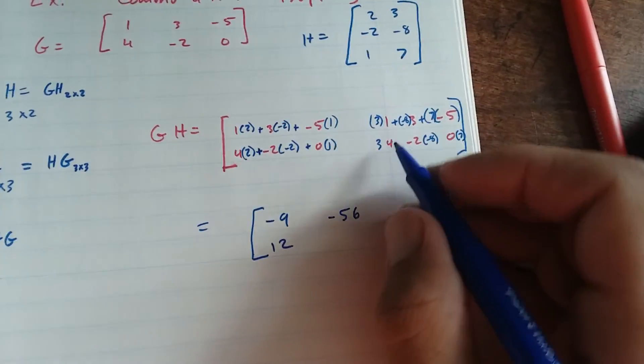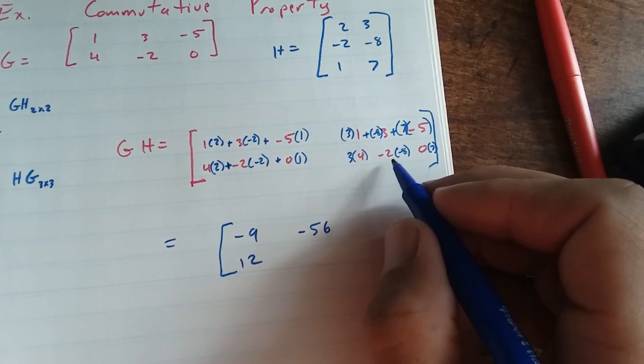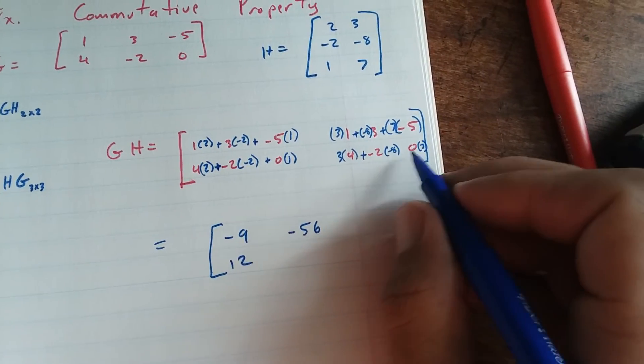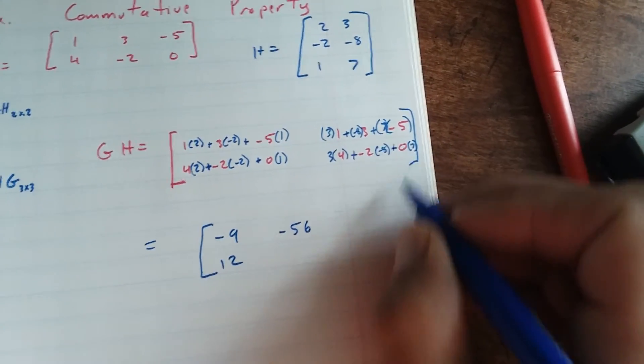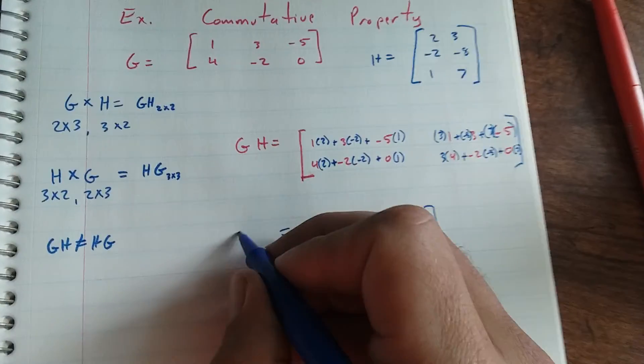And then we have, that's multiplication there, 12 plus 16 is 28. 28 plus 0 is 28. So that's GH.